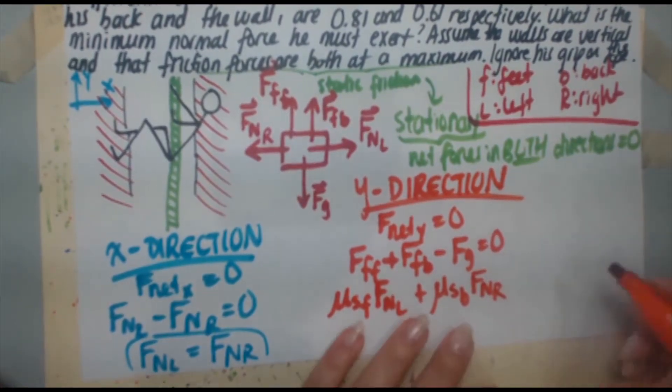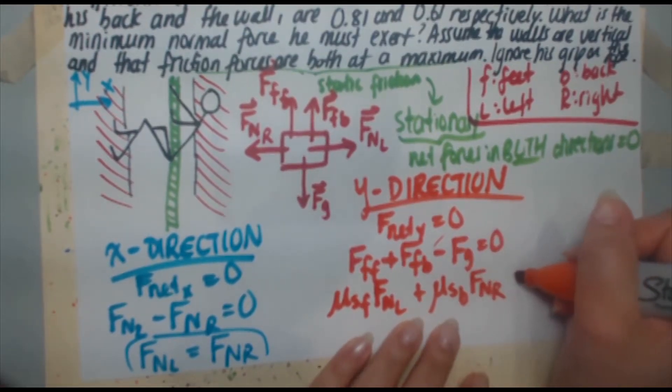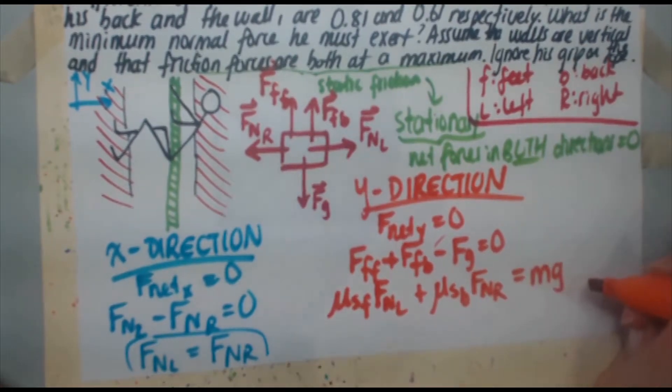Plus force of friction on the back. So we're going to use mu s coefficient of static friction for the back, because they're different times FFB force of friction on the back. Force of friction on the back is going up. The normal force is coming out in this direction. So the only normal force going in this direction is FNR. So we get FNR. FG is FG. We know what that is. I'm going to just take it and bring it to the right side. So I'm going to call that mg.